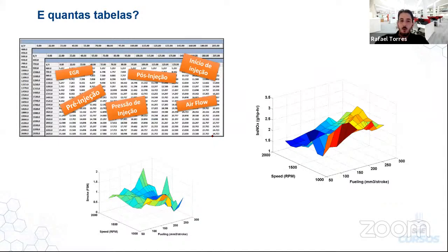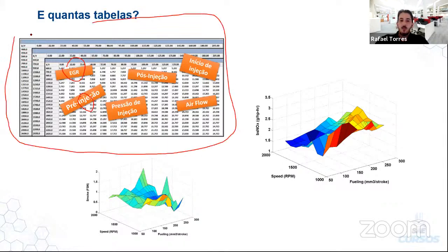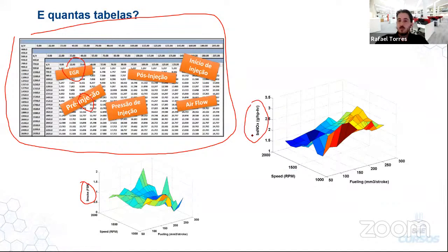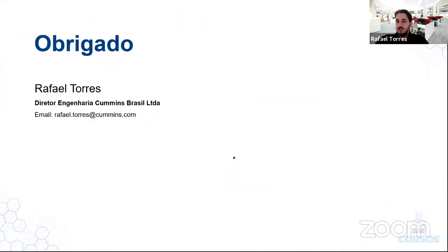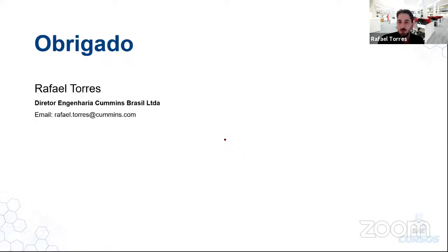No final, há um conjunto de mapas — modelamento matemático de tudo isso — inseridos num módulo eletrônico, que dão a resposta de como o motor vai se comportar em relação à fumaça e aos óxidos de nitrogênio. Assim, de forma sumarizada, foram explicados os princípios de uma calibração através dos princípios termodinâmicos e por que se faz calibração hoje em dia num módulo eletrônico.